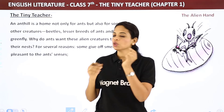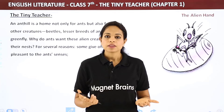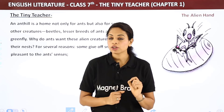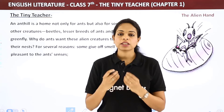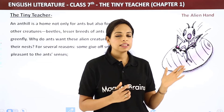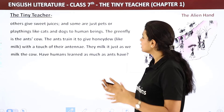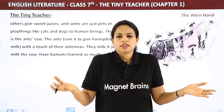Why do ants want these alien creatures to live in their nests? For several reasons: some give off a smell that is pleasant to the ants' senses, and that's why ants allow them to stay. Others give sweet juices. And some are just pets or playthings — like cats and dogs to human beings. Some insects are kept for their juices, others just for play.